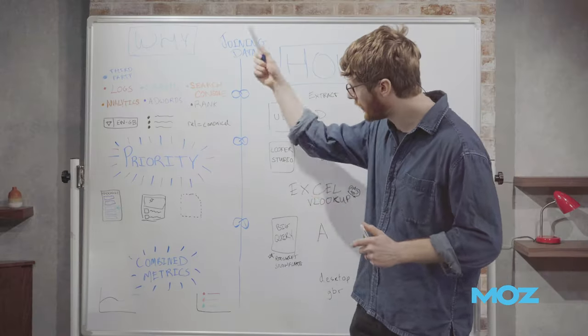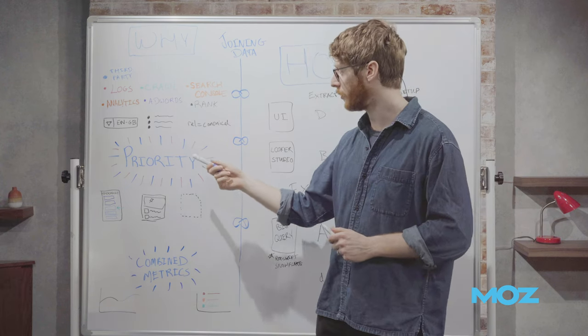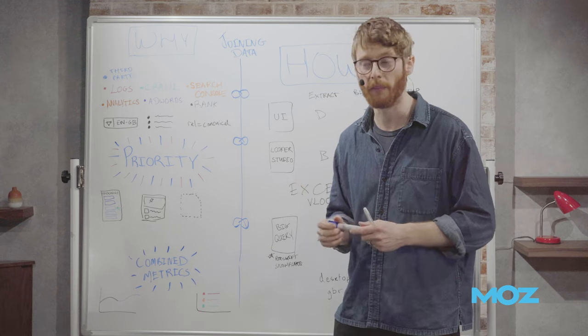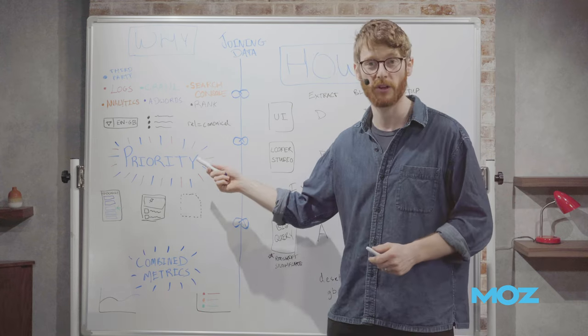So those are the big whys, right? That's the big thing that you get from joining these. The biggest one you get is priority. It will change the order you do everything. It will also mean that more stuff gets done in the business because businesses at the end of the day care about numbers, and being able to put numbers and values on things just makes people take you more seriously.